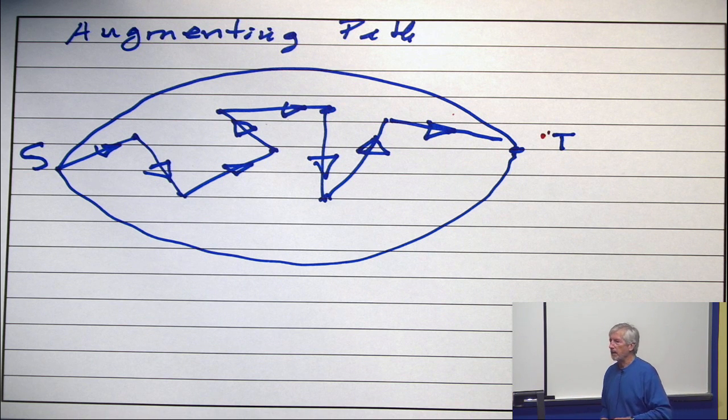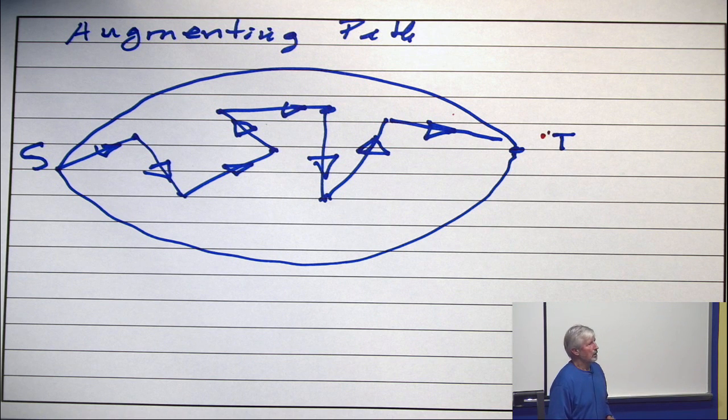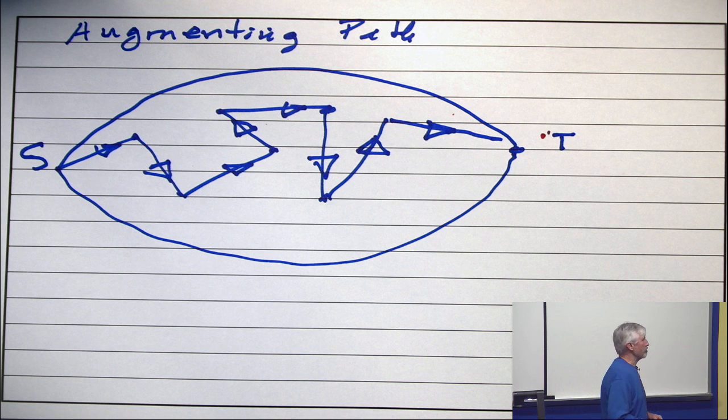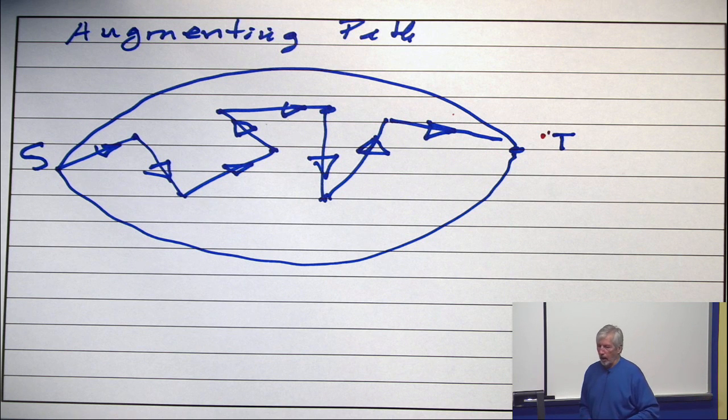What would it mean if I said an edge is empty? Obviously, you just mean the flow on the edge is zero. Nothing, no oil is going through the pipe.